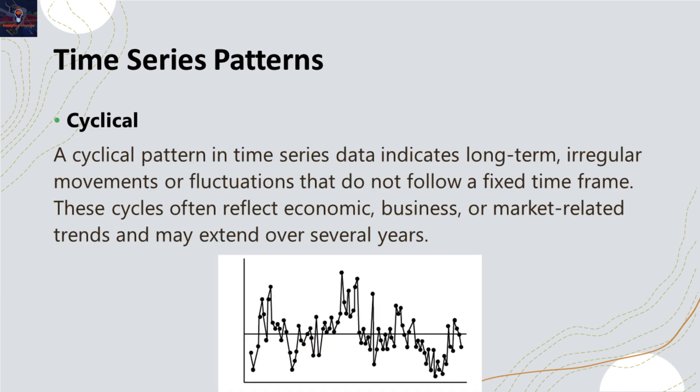The last one is cyclical pattern. This component is similar to seasonal fluctuations, but unlike seasonal patterns, cyclical patterns do not have fixed periods of time and can vary in amplitude. This makes the cyclical component difficult to predict. This pattern is mostly influenced by external factors like economic conditions, policy changes, and technological advancements. An example could be the business cycle, which includes periods of economic expansion and contraction.